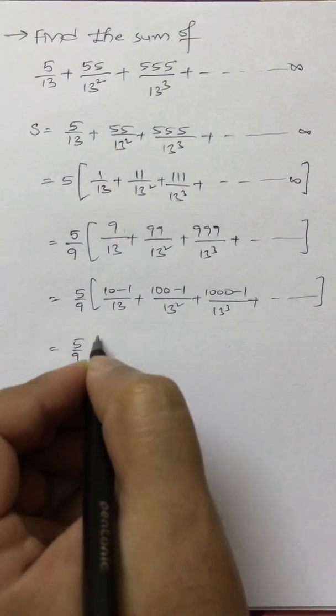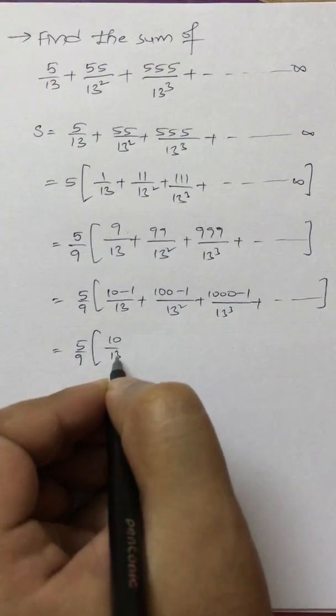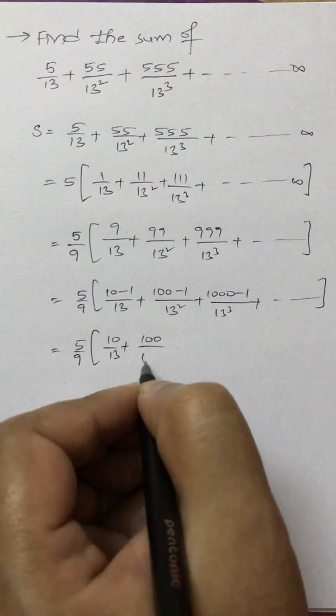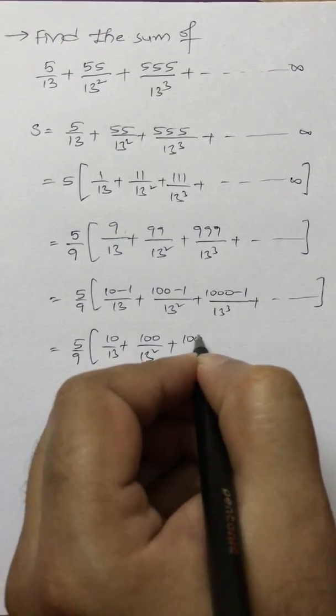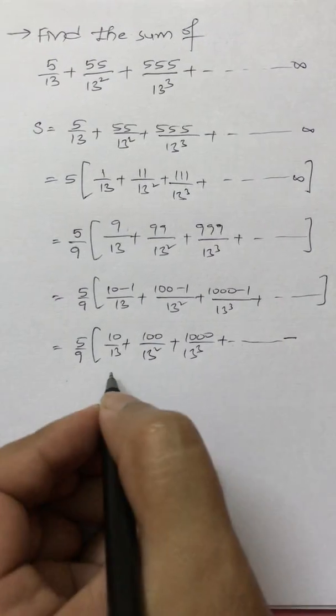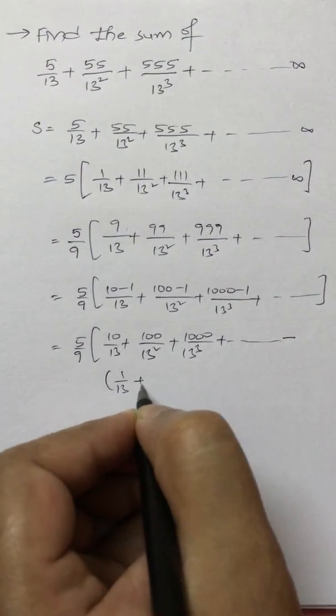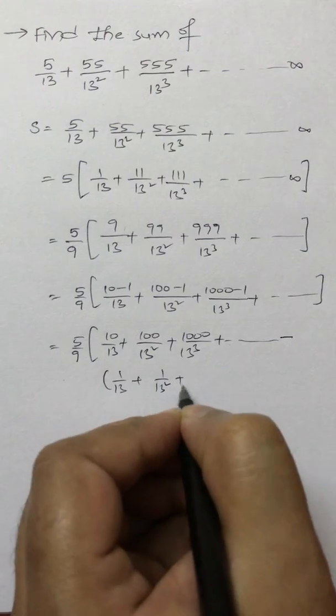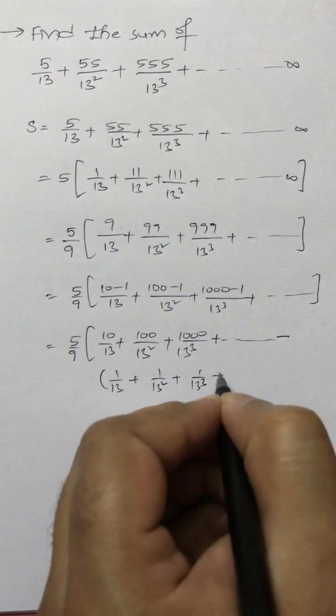Now separate the first terms: 10/13 + 100/13² + 1000/13³ + ... to infinity, minus [1/13 + 1/13² + 1/13³ + ... and so on].